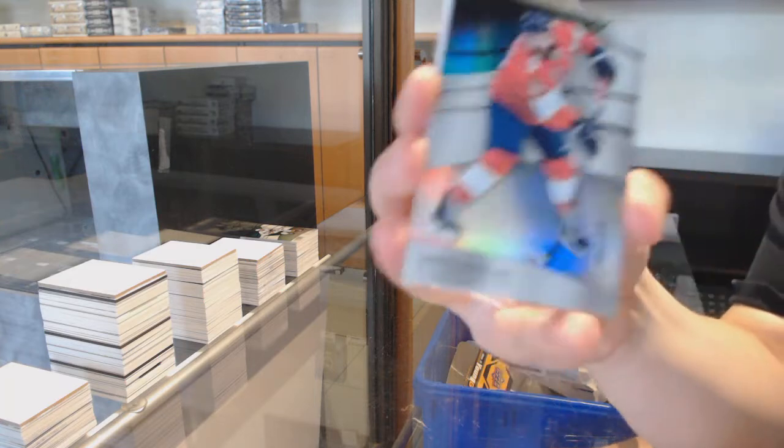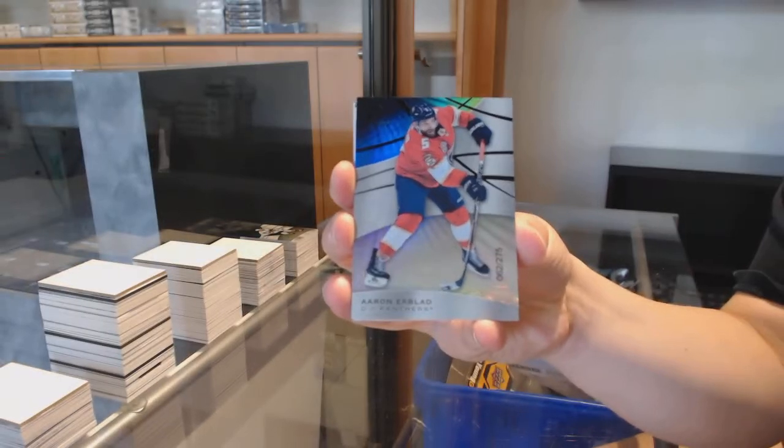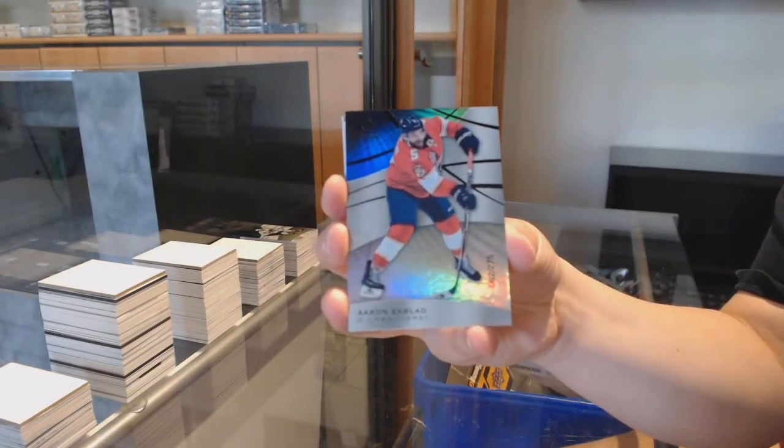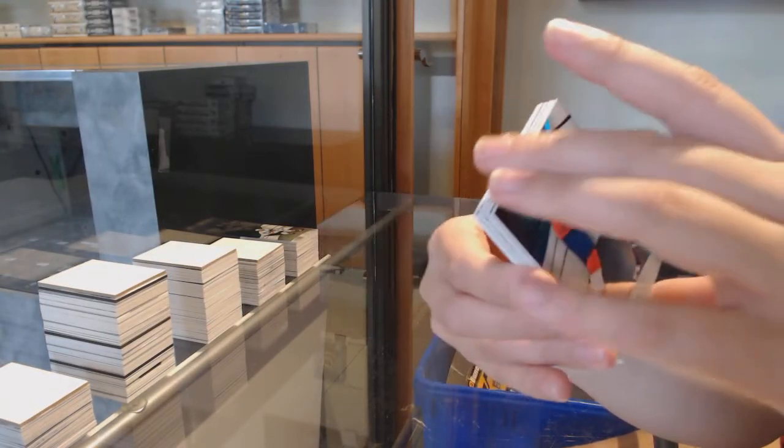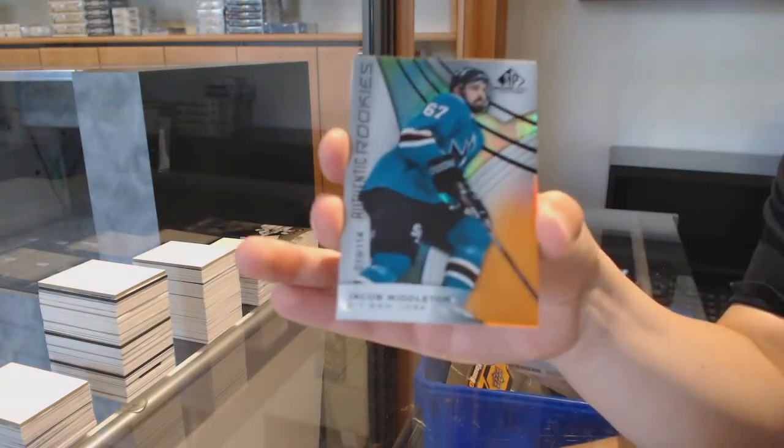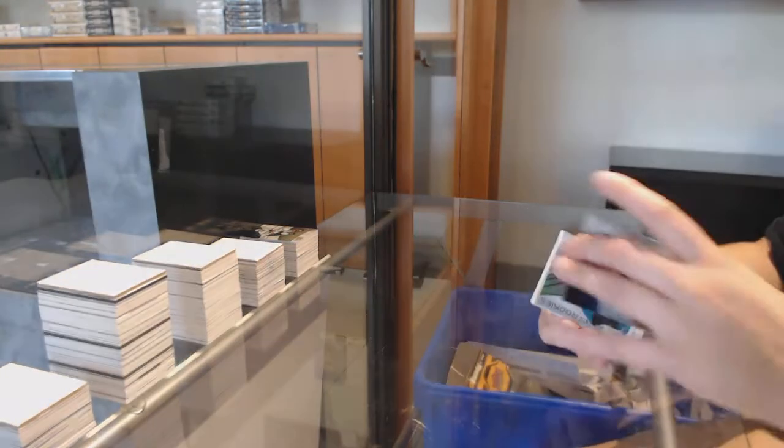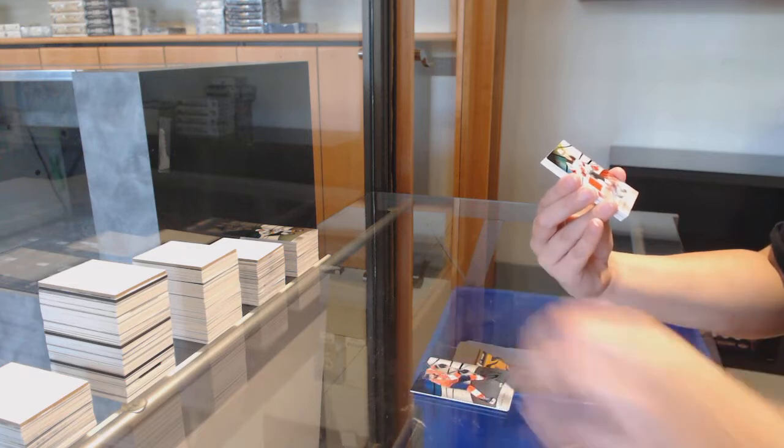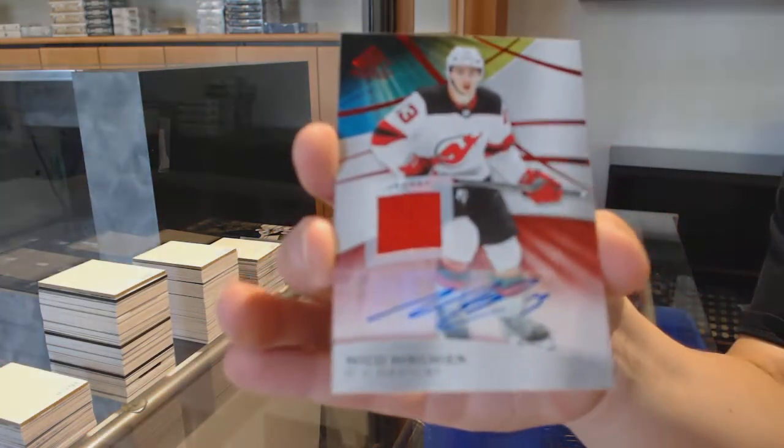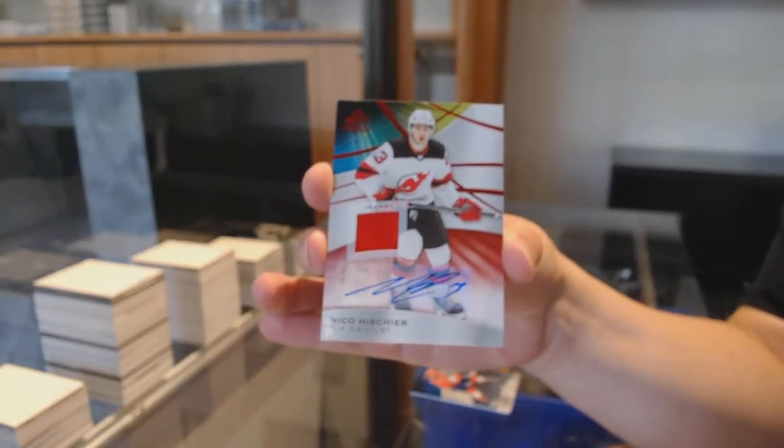We've got number 275 for Florida, Aaron Ekblad. We did do one on release, before release, Dylan, a case one. Number 214, orange of Jacob Middleton. I don't think there'll be another case one, though, but it might be like in a box one. Nico Hischier, red jersey auto for the Devils.